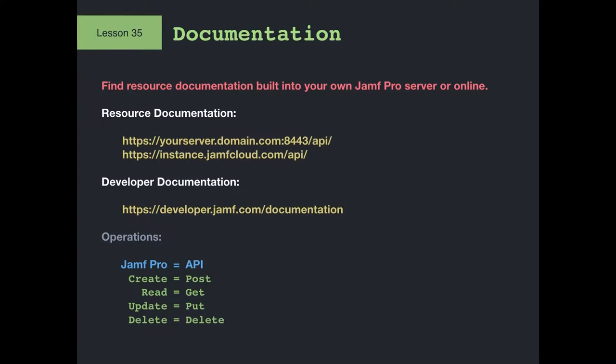If you have full administrator access and use your credentials, your API can do everything you can do. Those permissions map to CRUD — Create, Read, Update, Delete — and that's exactly what the API can do. The names are different but it's still CRUD: post is create, get is read, put is update, delete is delete. For more information, you can go to developer.jamf.com/documentation.